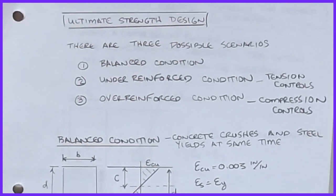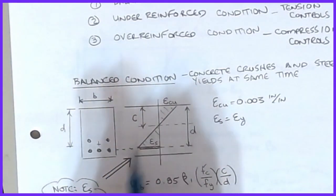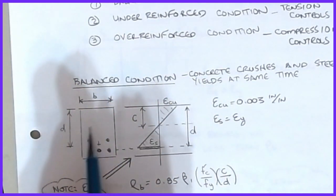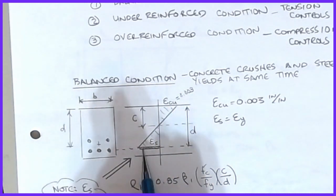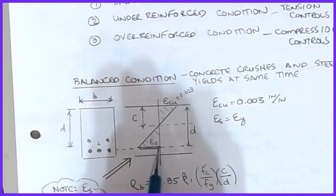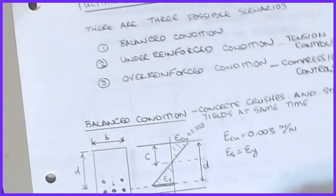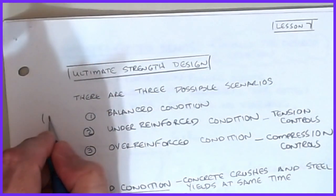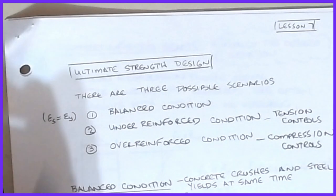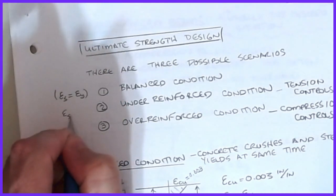Let's go back and look at our situation a little more. If we draw the strain diagram for a singly reinforced beam, it's a linear diagram with epsilon_cu at the top — typically 0.003 — and some corresponding epsilon in the steel. I've changed the nomenclature slightly, but let's think about this picture. There are three possible situations: the balanced condition, where epsilon_s equals epsilon_y, meaning the steel yields at the exact same instant the concrete reaches 0.003.